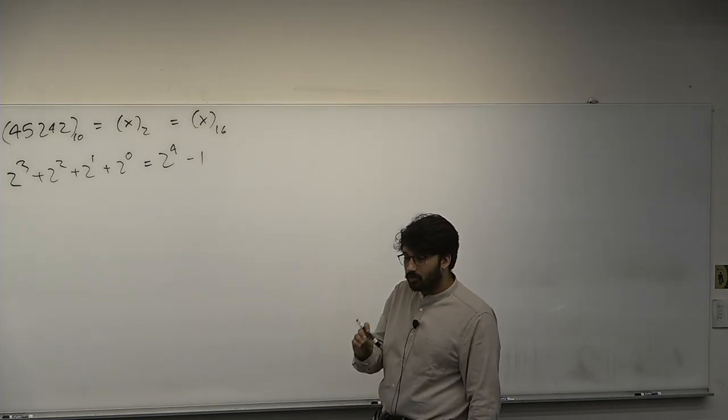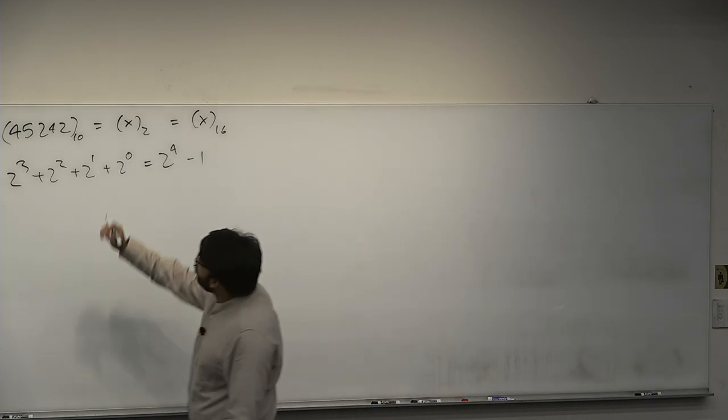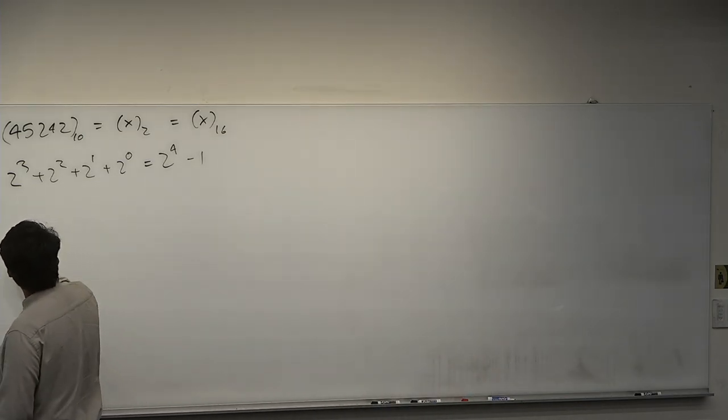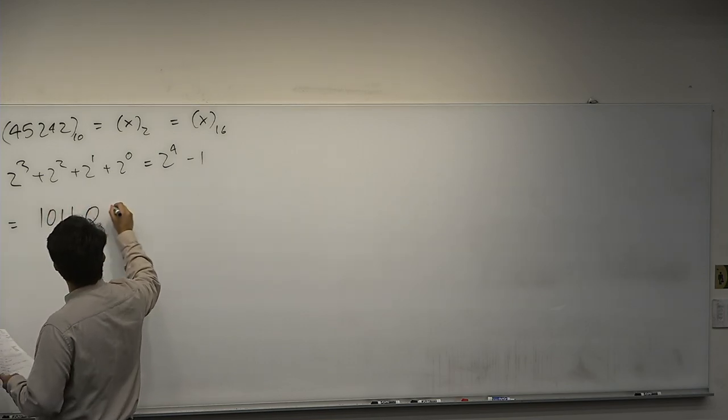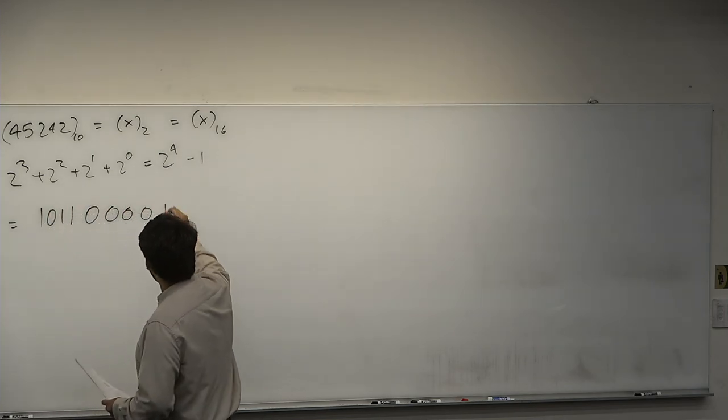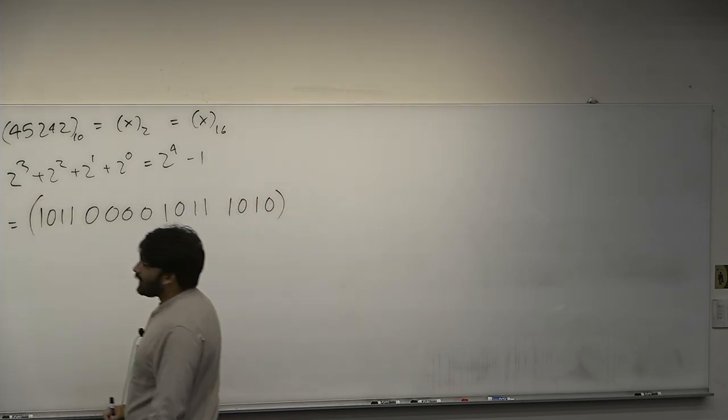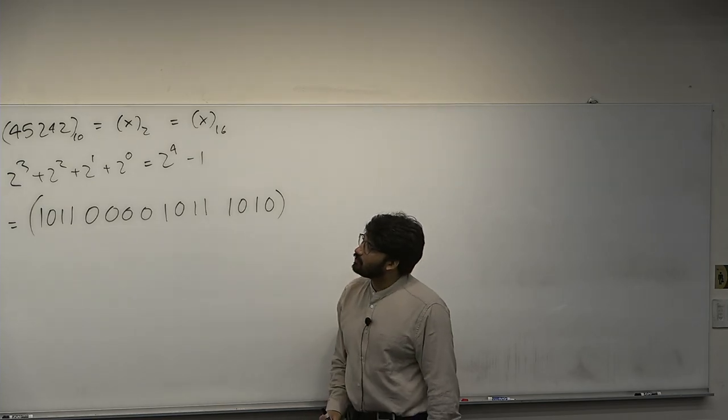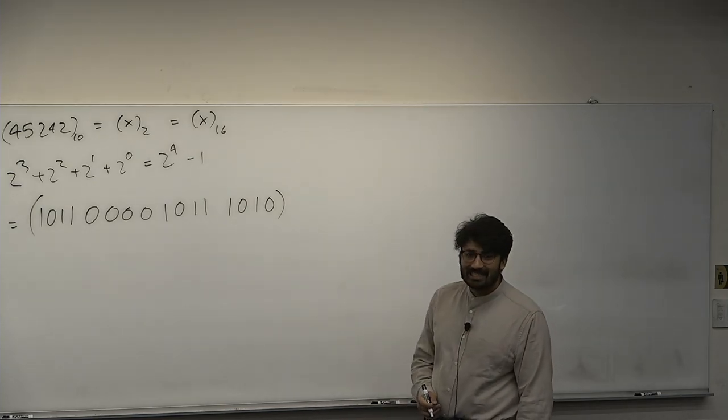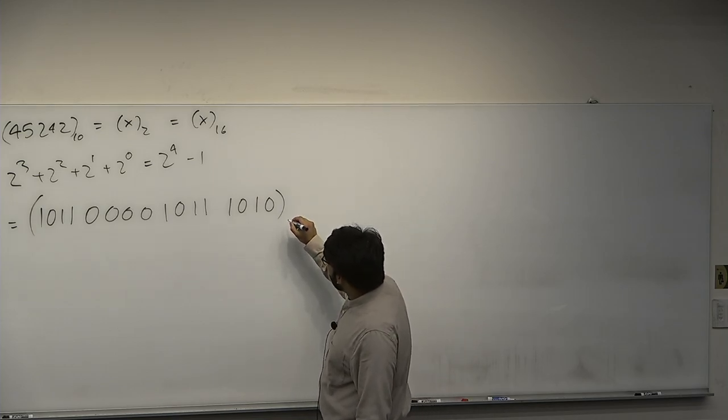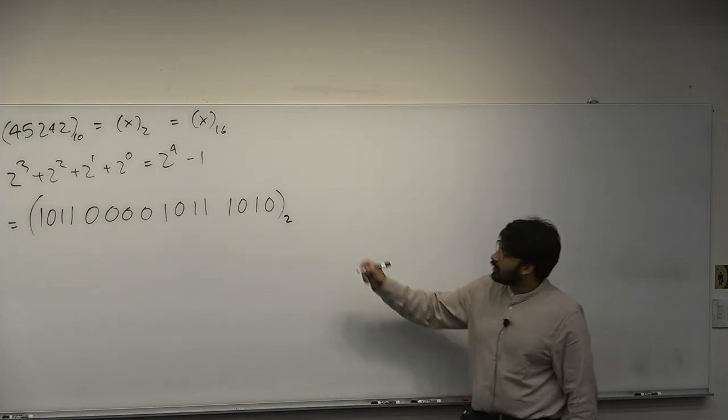It equals 2 to the 4 minus 1. Yeah. What is 2 to the 4 minus 1? 15. So these are four digits of binary, but they can equal one digit of hexadecimal. So you can do... If the numbers are powers of each other, you can take several digits and quickly convert it. So I'll tell you 45,242 in base 2 is going to be equal to 1011, 0000, 1011, 1010, okay? Big binary number. You can represent it in five digits in base 10. Unfortunately, you have to use... How many digits is that? That's 16 digits. That's too long. The computer's going to do that for you and not us. But we can convert this quickly to something in base 16, okay?